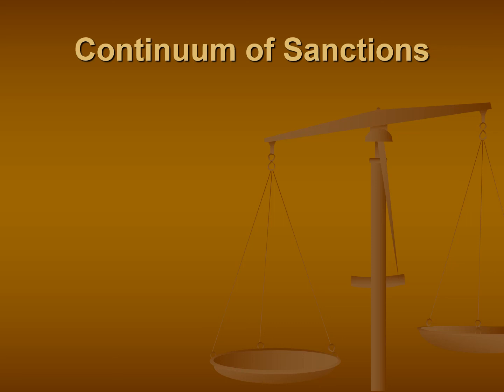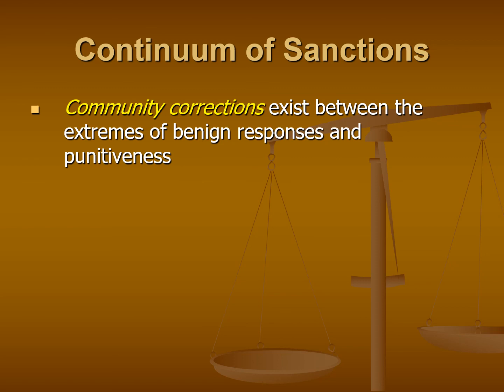When we think about community corrections, it fits into what we call a continuum of sanctions. Community corrections — including probation and intermediate sanctions — exists between the extremes of benign responses, basically allowing people to get away with criminal behavior, and overly harsh punitiveness. We want a nice array of different types of punishments that sort of fit the particular crime that somebody may engage in.